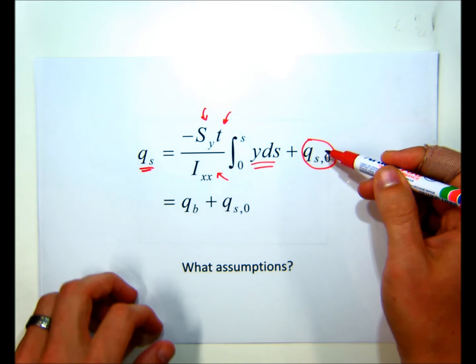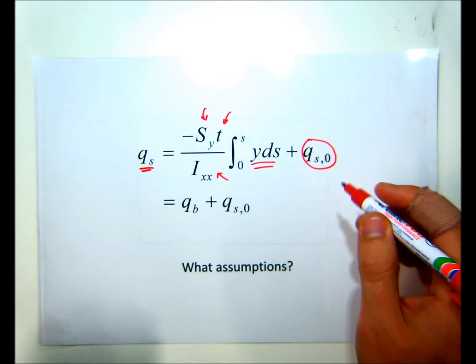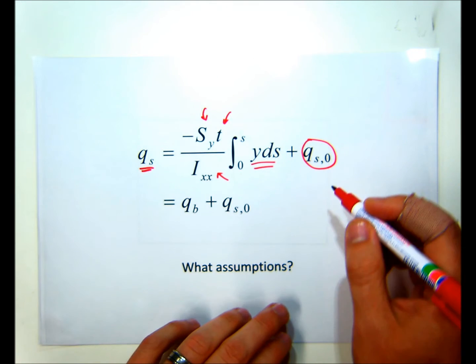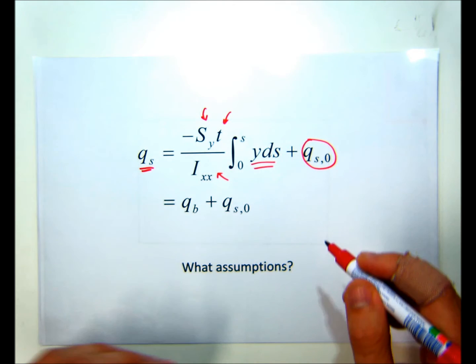which wasn't a problem for open sections, because we could start the integration at a free edge. But with our closed section, we have no free edge. So we need a way of calculating this constant shear flow.